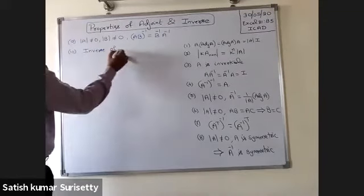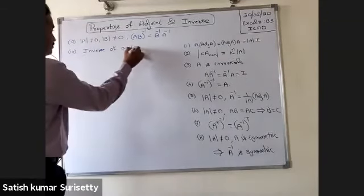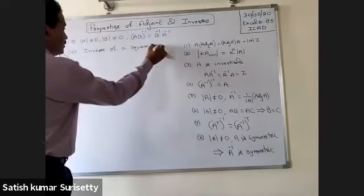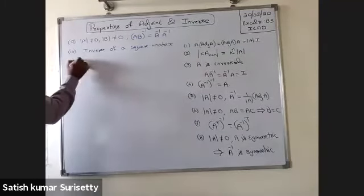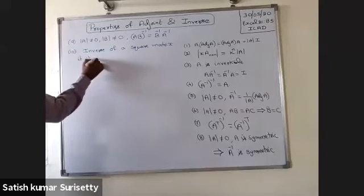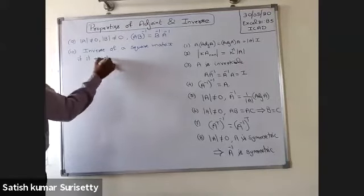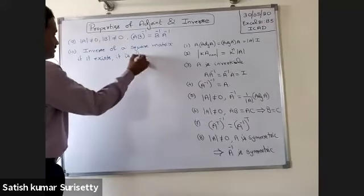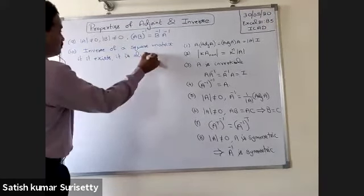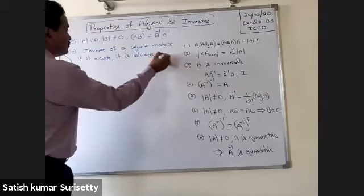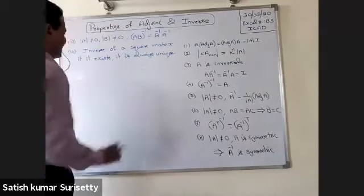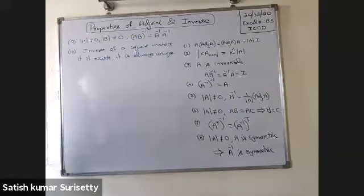Inverse of a square matrix, if it exists, is always unique.